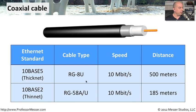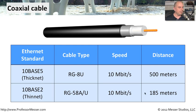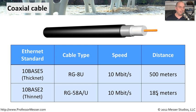We called them 10Base-5 and 10Base-2 because, as a standard, they went 500 meters and about 200 meters respectively. Just keep in mind that the "2" in 10Base-2 doesn't necessarily stand for 200 — they took 185 meters and rounded up to 200. The practical distance for 10Base-2 cabling per the standard was 185 meters.